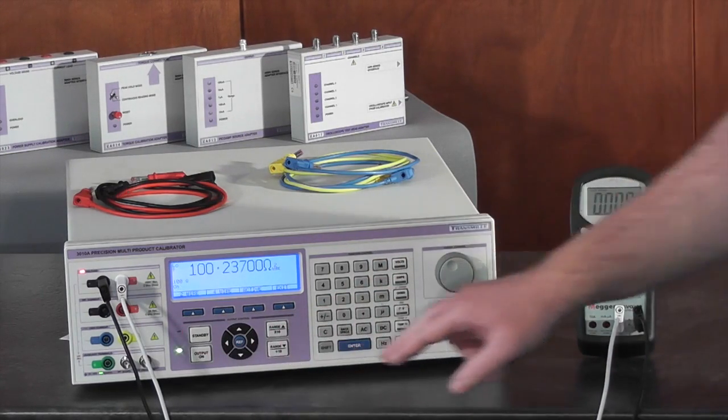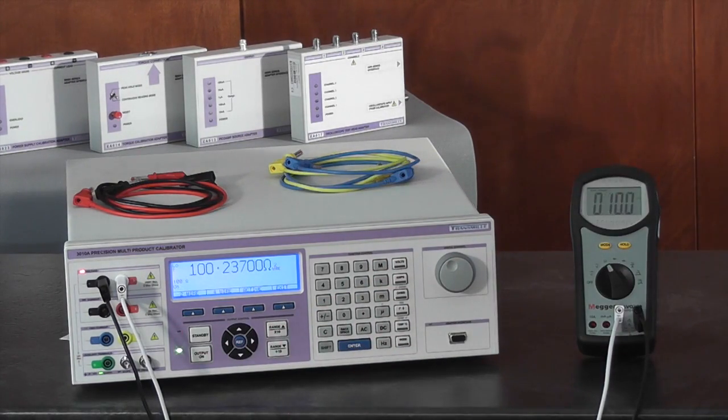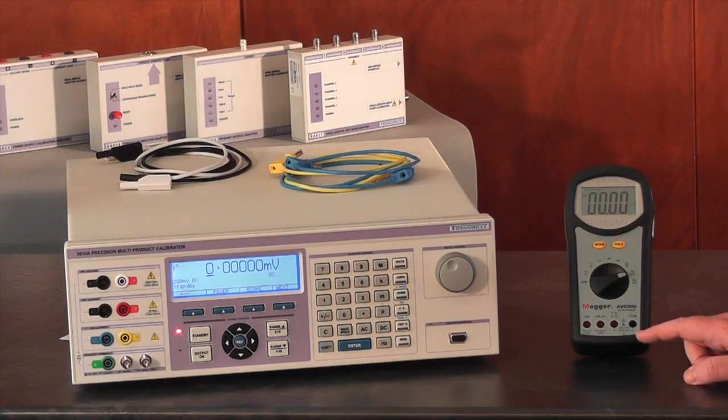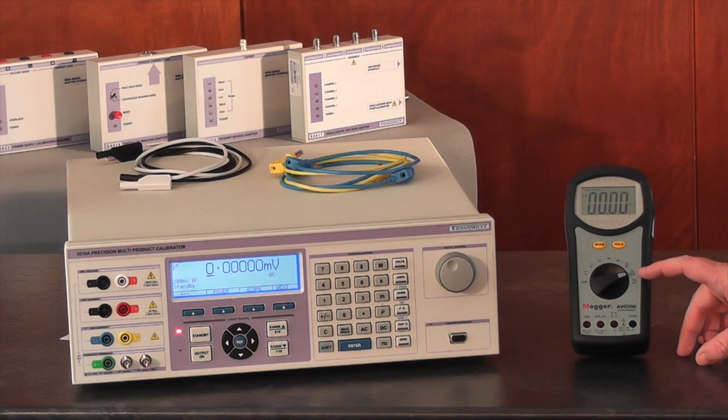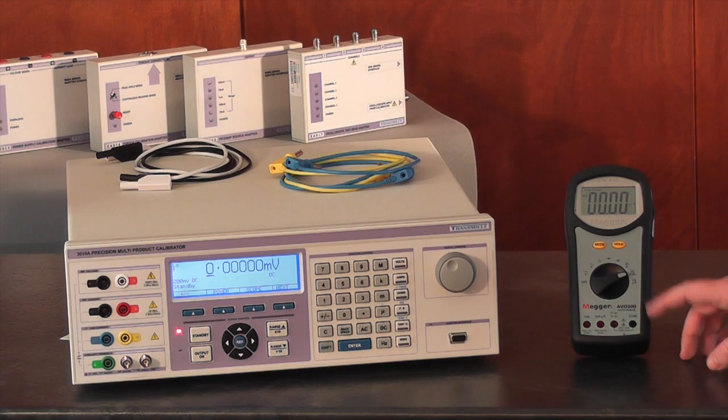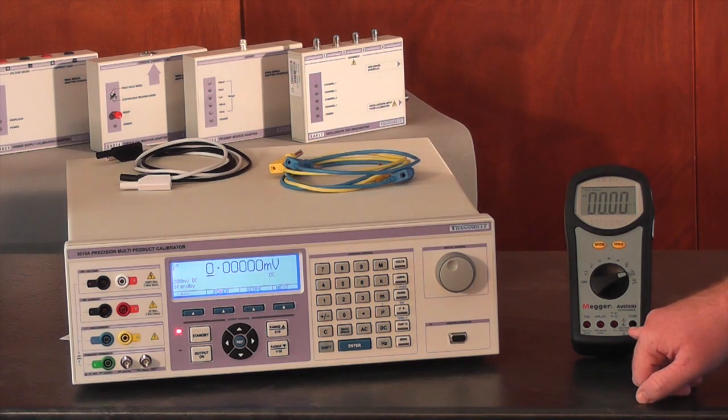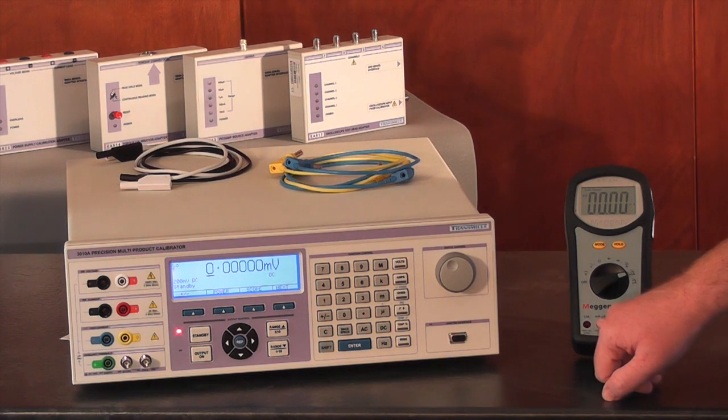We will now move to testing the current input functions of the multimeter. We have selected the milliamp range of the multimeter, which is measured between the common terminal and the milliamp and microamp terminal.